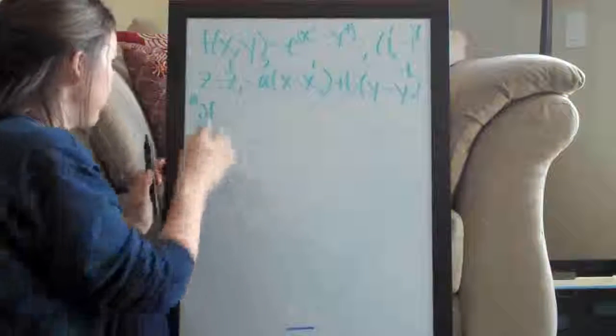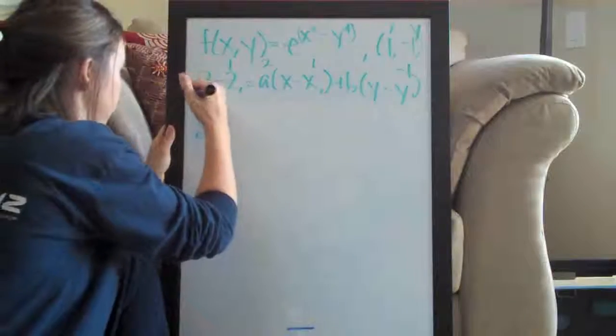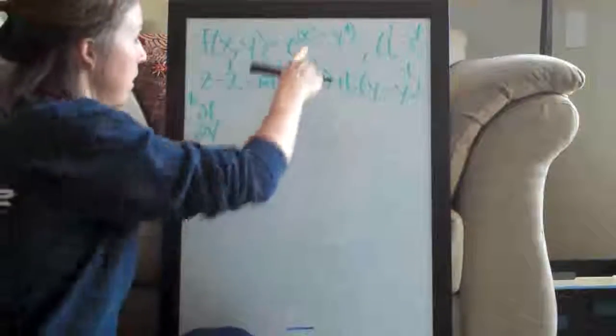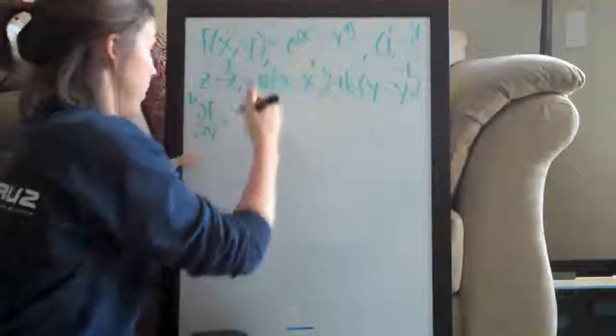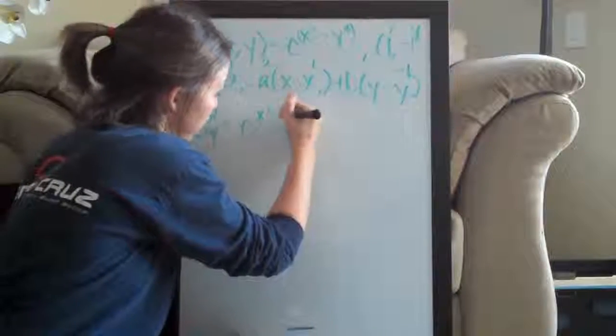So partial derivative, this is now going to be, instead of for a, this is going to be for b, partial derivative with respect to y of the same function here. Again, originally it doesn't change: e to the x squared minus y to the fourth.